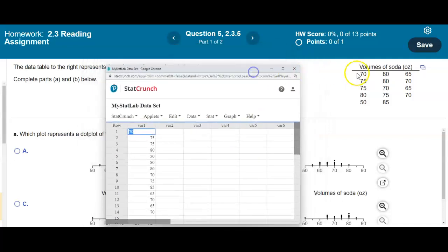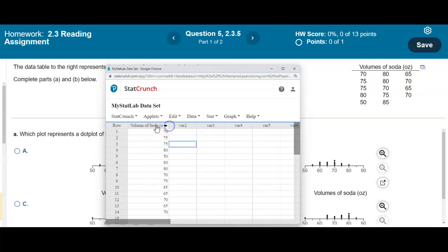And then what we're going to do is we're going to say it says volumes of soda. So I'm going to come up here and I'm going to change the column title to be volumes of soda. And then I'm going to write ounces. Okay, so again, you want to get in the habit of being able to edit certain things when you come in here.